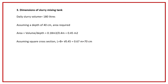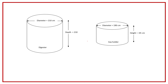So this is the design of the biogas plant. The digester has a diameter of 210 centimeters and depth of 210 centimeters, and the gas holder has a diameter of 190 centimeters and a height of 65 centimeters. The first part of the question — designing a floating drum type biogas plant for six cows and six calves — is now complete.